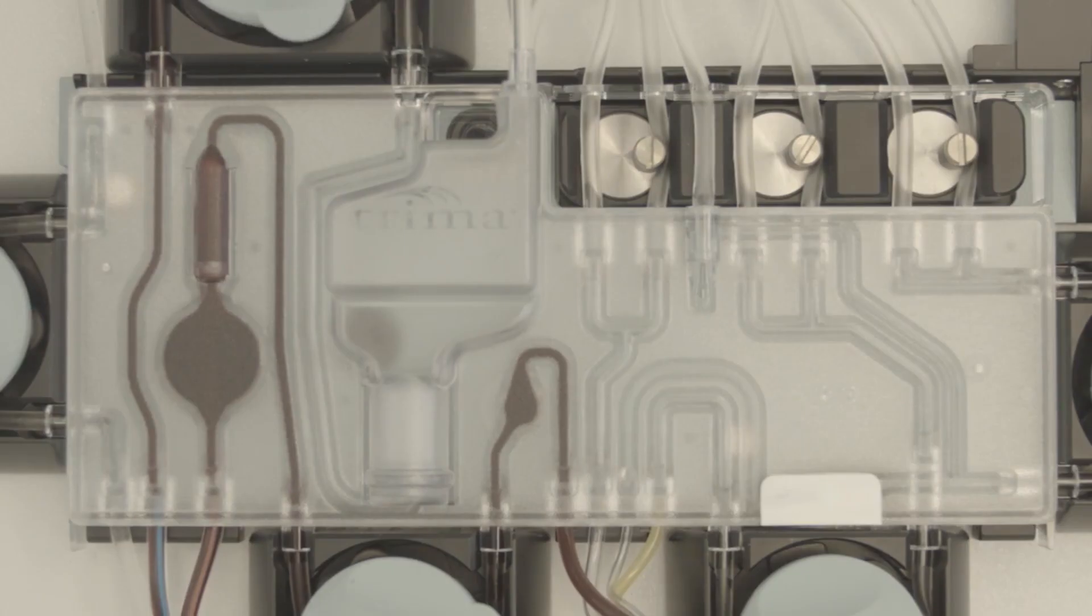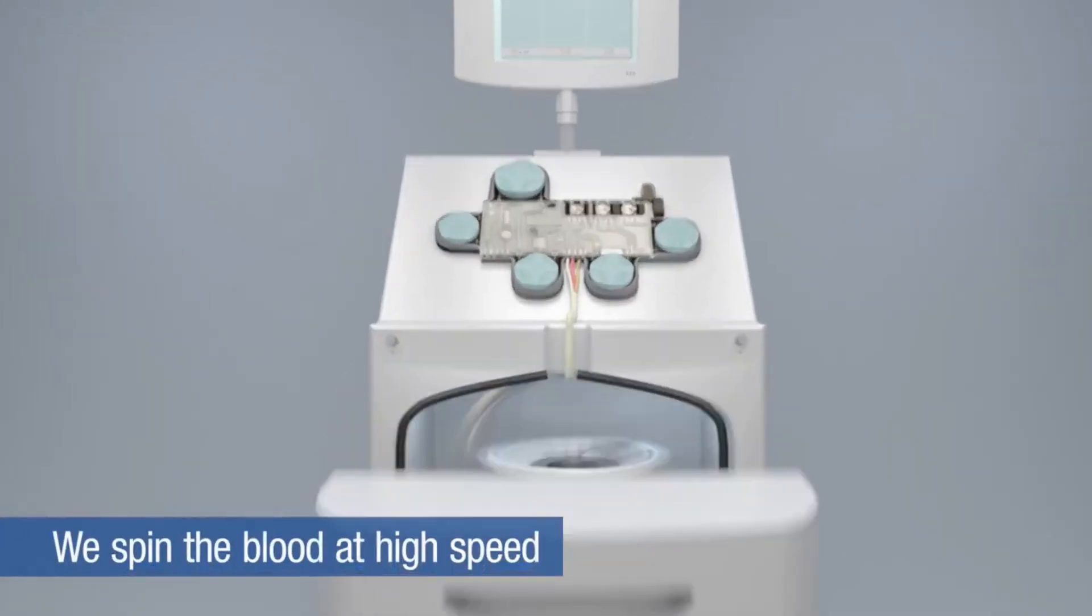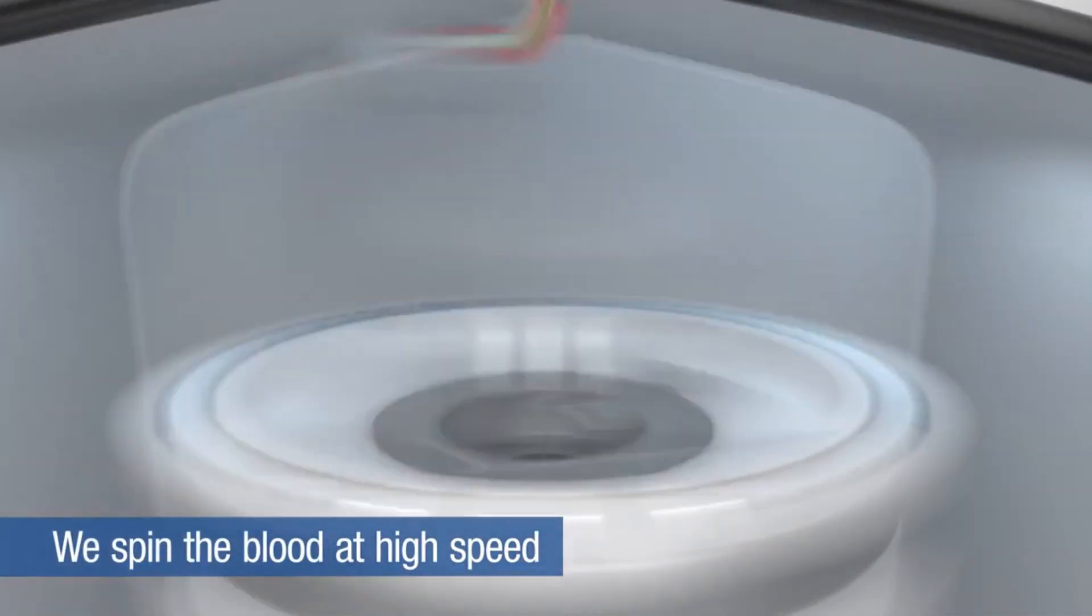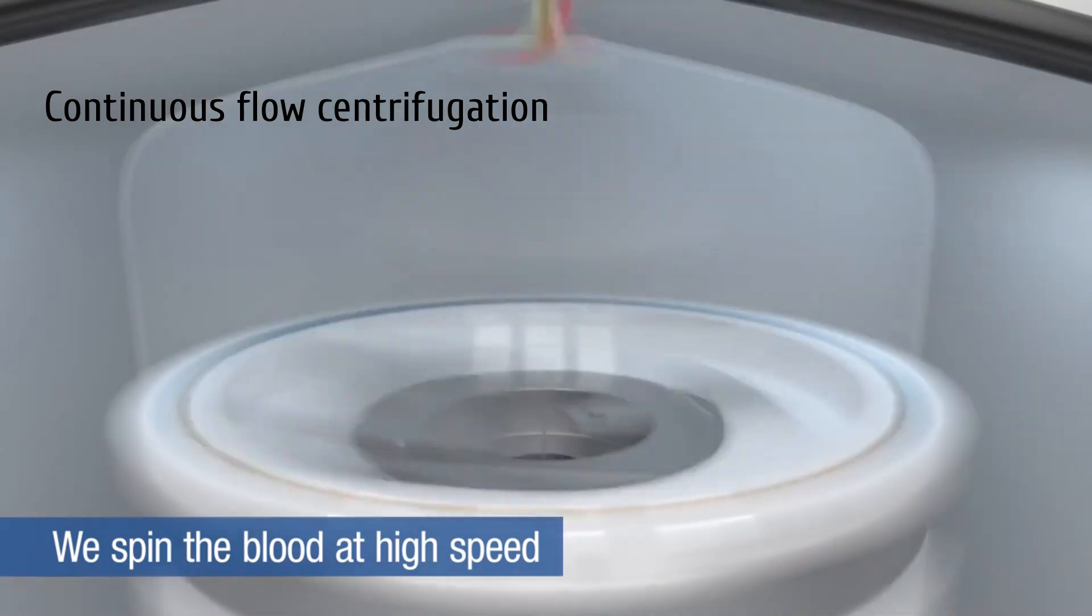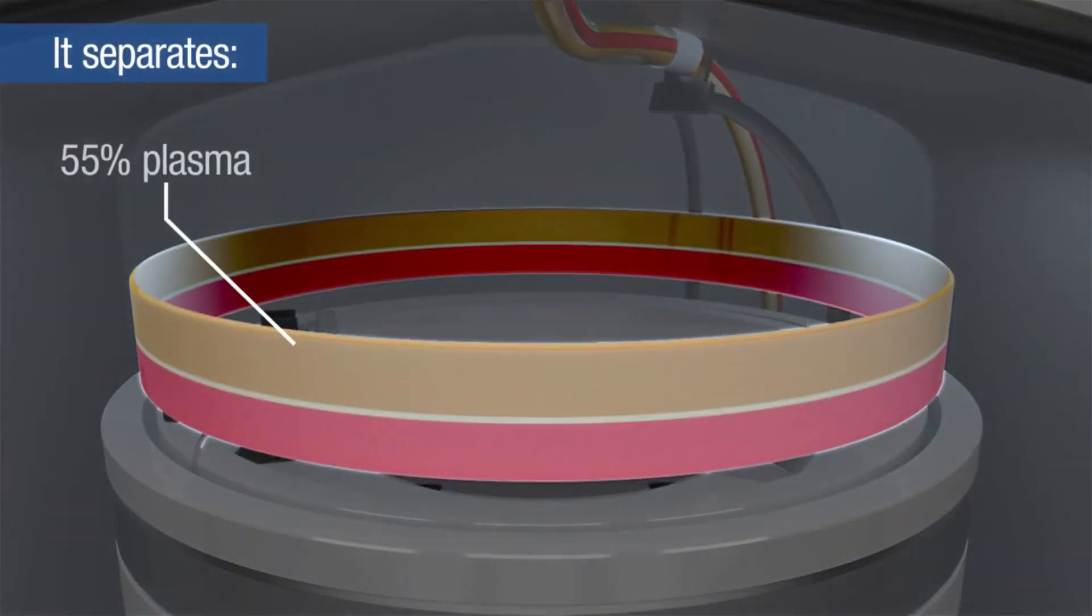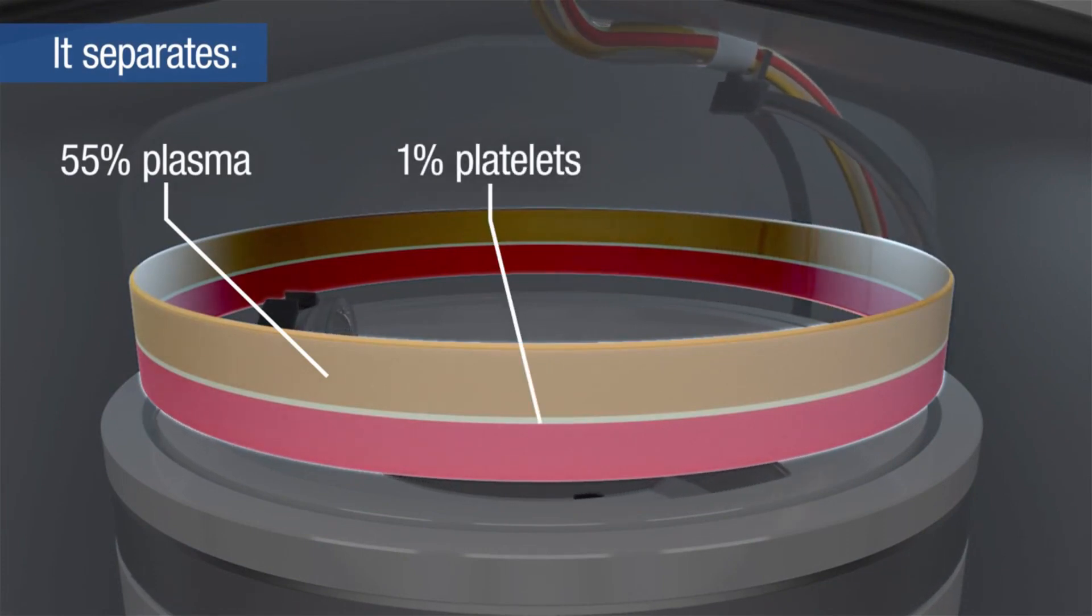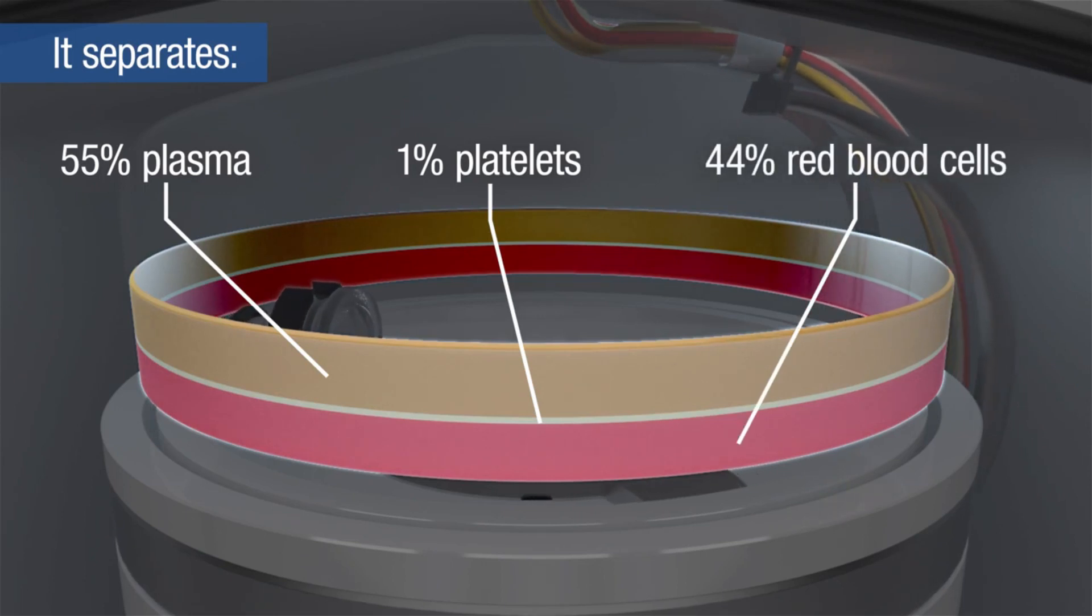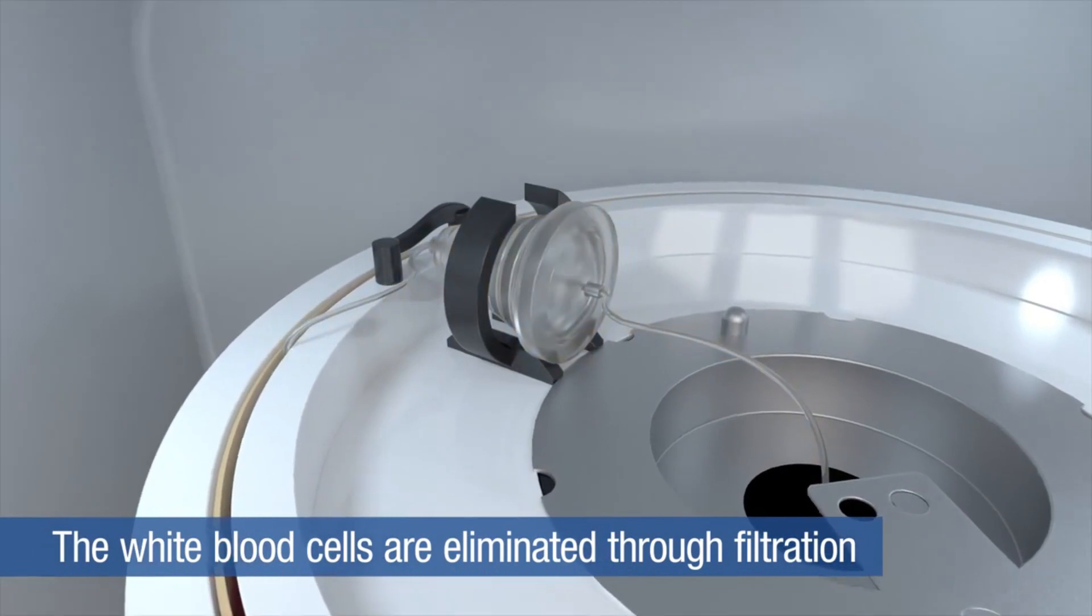Let's learn about the types of apheresis machines. The centrifugation method can be divided into two basic categories. The first method is continuous flow centrifugation. Continuous flow centrifugation, or CFC, historically required two venipunctures as the continuous means the blood is collected, spun, and returned simultaneously. Newer systems can use a single venipuncture.